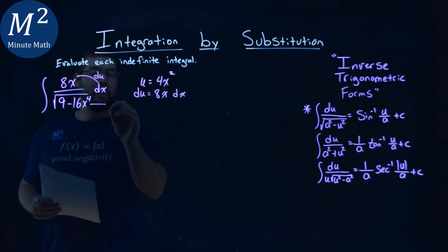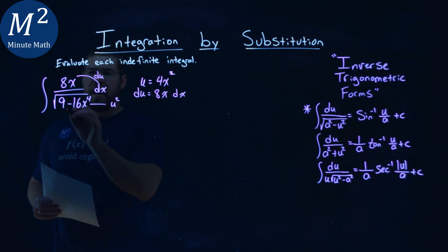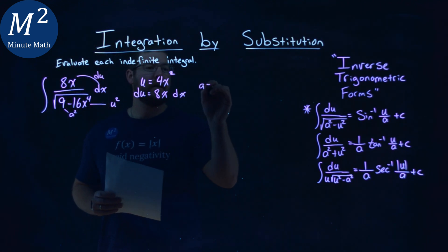Here I have my u squared, right? My u squared is that 16x to the 4th. So I need to find my a value, and that's going to be the 9. That's the a squared, and so if a squared equals 9, a equals 3.